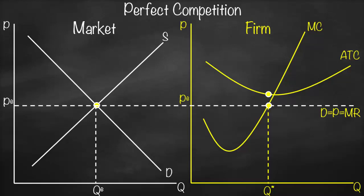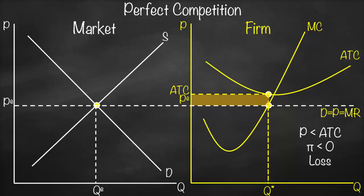At Q*, I go up to intersect with my average total cost curve, which gives me the average total cost. Here you can see that average total cost is bigger than price, which means we make a loss. Therefore, if price is lower than average total cost, profit is less than zero — it is negative — and consequently we make a loss.